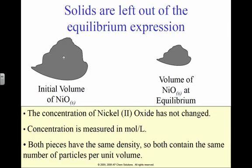If this is the size of my initial amount of nickel oxide and this is my final size of my nickel oxide, nickel oxide still has the same concentration. It has a different amount, but the concentration of nickel oxide has not changed, nor will it. So since it does not change, we can just isolate it and not put it into our expression.